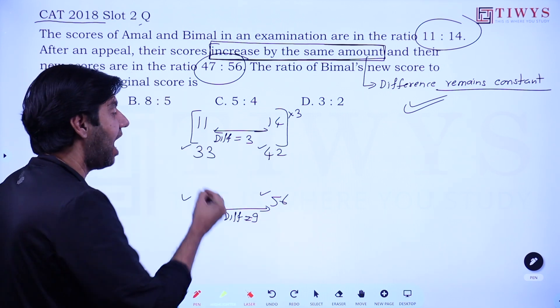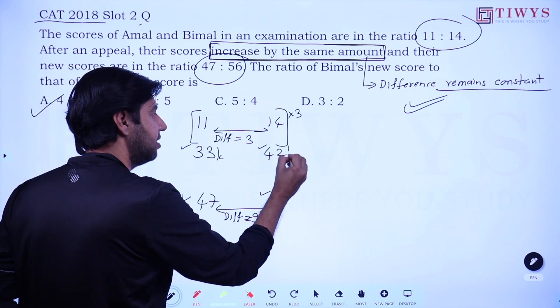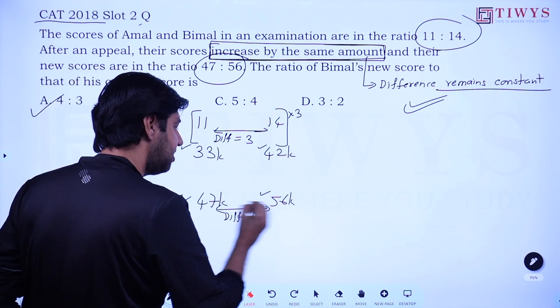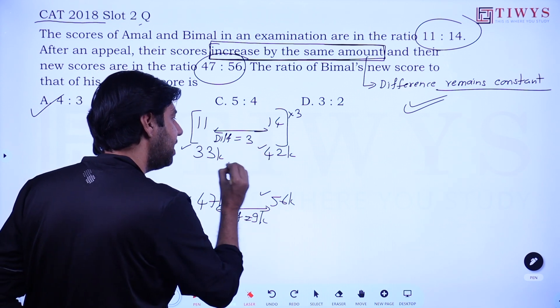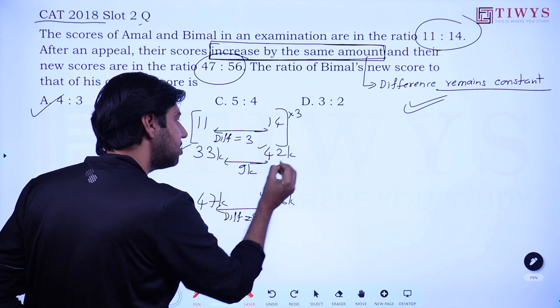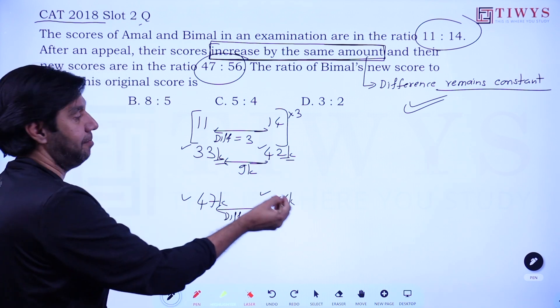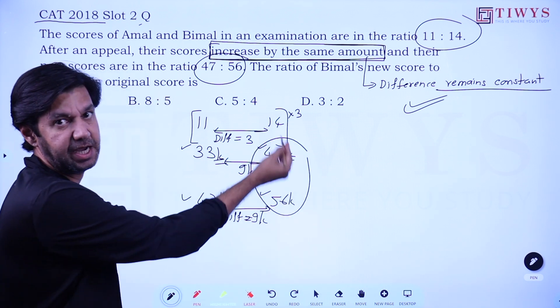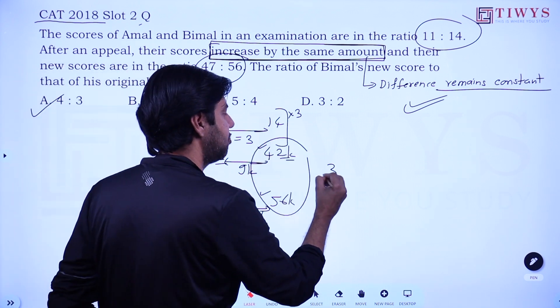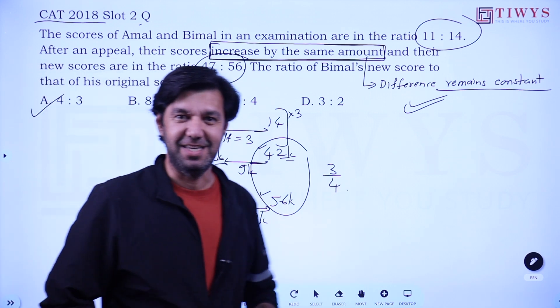And if you are very fast, you know that all these four values now are with the same constant. Why? Because if this difference is 9k, this also has to be 9k. So the constant here has to be k, same. And so if you take the ratio of this, the k and k gets cancelled out, and the ratio will be 3 to 4. Easy, right?